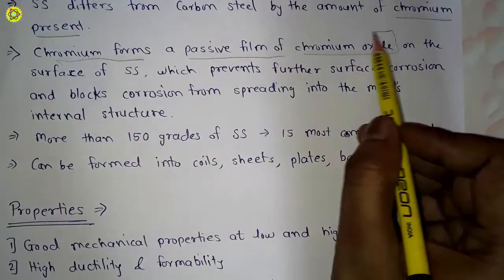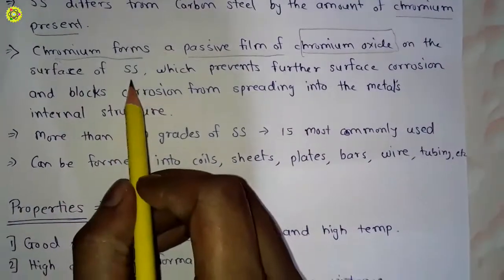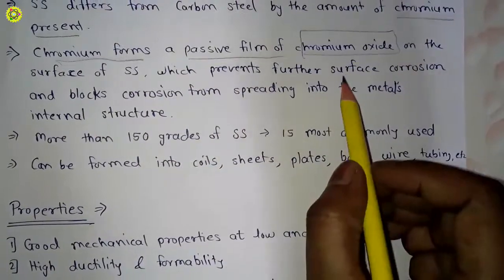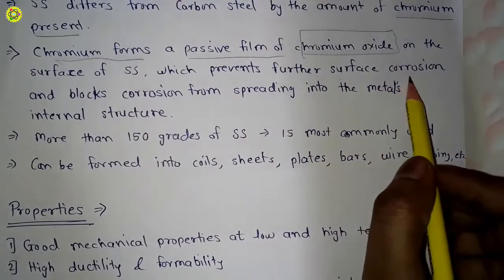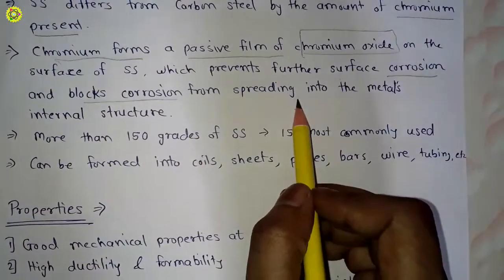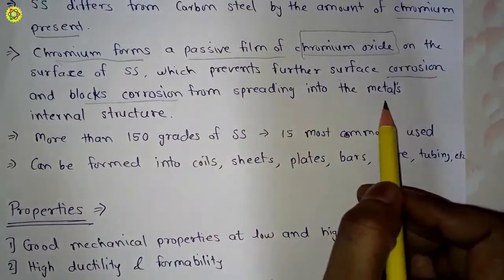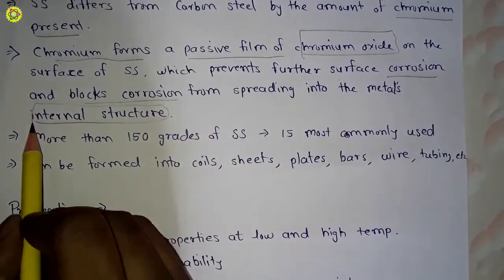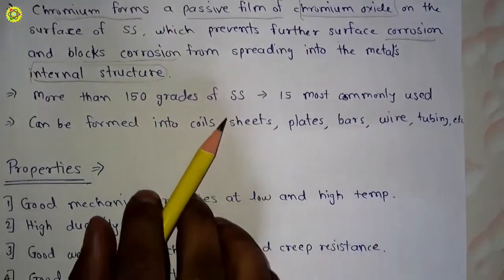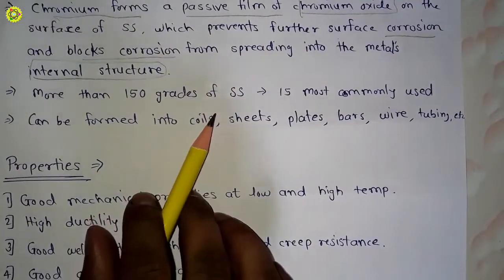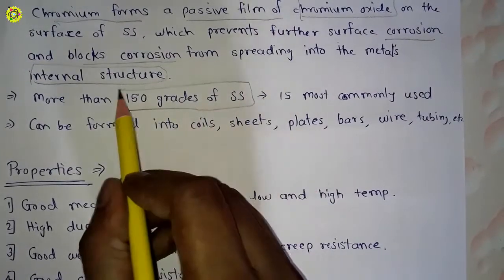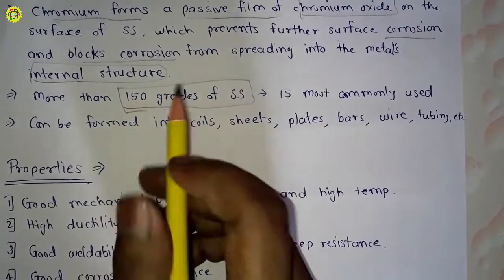This passive film of chromium oxide prevents further surface corrosion and blocks corrosion from spreading into the metal's internal structure. There are more than 150 grades of stainless steel, out of which 15 are the most commonly used.